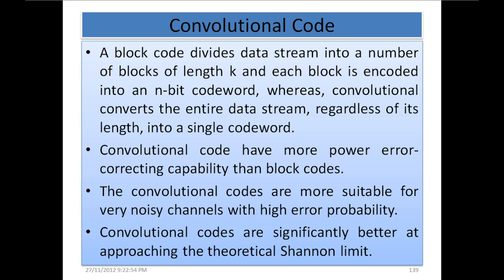Convolutional code: A block code divides a data stream into blocks of length k, and each block is encoded into an n-bit codeword. A convolutional code, in contrast, converts the entire data stream regardless of its length into a single codeword. This is the main difference between a block code and a convolutional code.